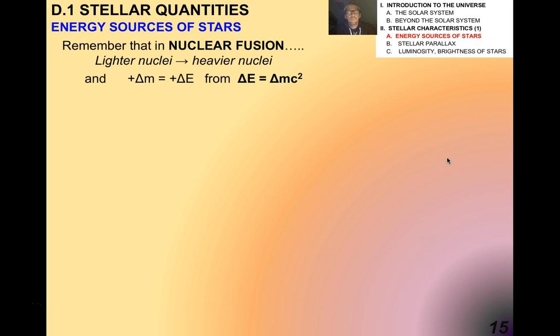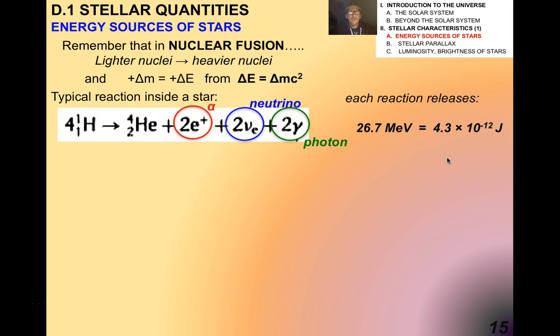We've talked a little bit about this before, but remember the difference between nuclear fusion and fission. Fusion occurs inside of stars, and this involves lighter nuclei going to heavier nuclei. A typical reaction inside of a star might be something like hydrogen into helium, which creates a neutrino, a photon, and an alpha particle.